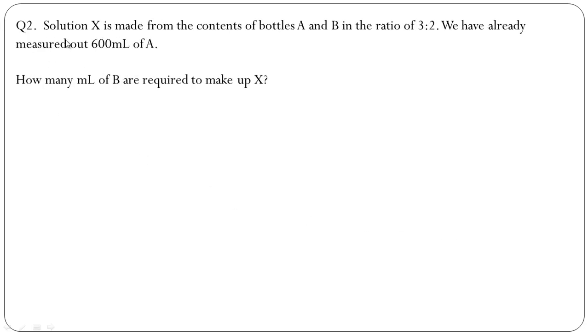Question number two: Solution X is made from the contents of bottles A and B in the ratio of 3 to 2. We have already measured out 600 ml of A. How many ml of B are required to make up X? Answer: 3 to 2 means that for every 3 parts of A we need 2 parts of B.